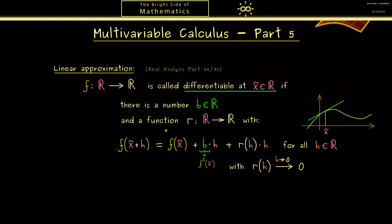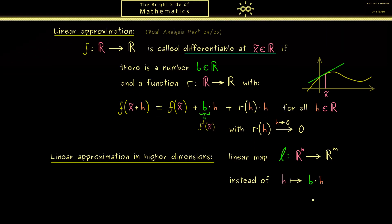And exactly this is now what we want to generalize to higher dimensions. Now this means instead of b times h we take a linear map in R^n. So you see the idea is completely the same, we just have to use the correct notions in higher dimensions. In other words, we will have a linear map l from R^n into R^m. And of course such a linear map could be represented by a matrix. More precisely, here instead of the one dimensional map that sends h to b times h, we now have a map that sends h to l of h. Hence you should see what in one dimension is the derivative is now a linear map.